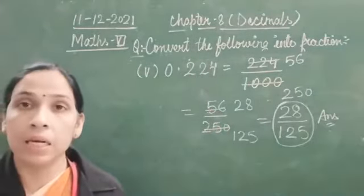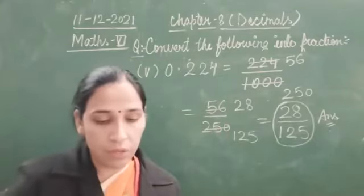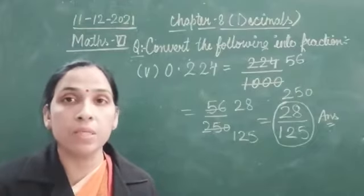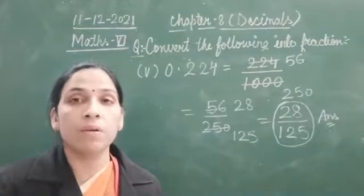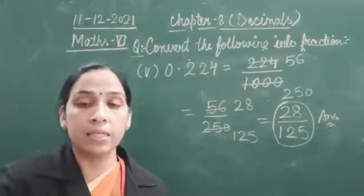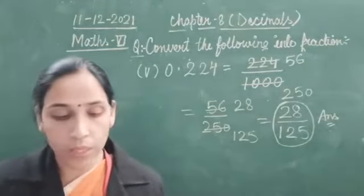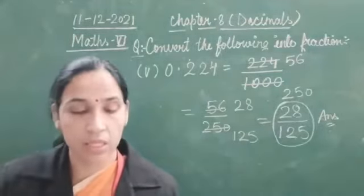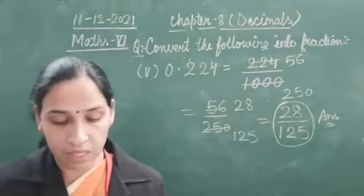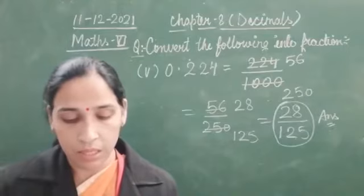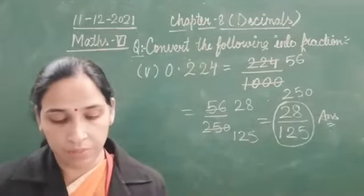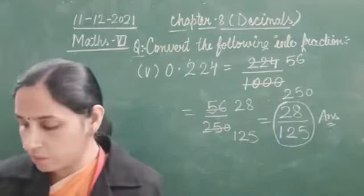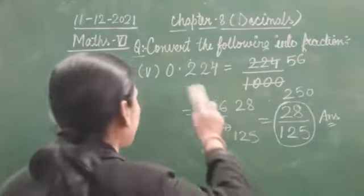I hope that is clear to you all. Now, the next kind of question: how to convert the following decimal numbers into mixed fraction. If we have been given with a whole number part and a decimal part, how can we convert it into mixed fraction? We are going to see convert the following into mixed fraction.